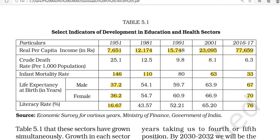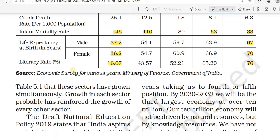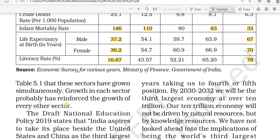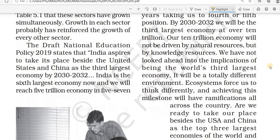By 2016-17, the literacy rate has risen to 76%, meaning 76% of people are now educated. From this table, we can understand how much education and health factors are affecting our economic growth. When health and education improve, the number of skilled workers automatically increases, per capita income rises, and healthy skilled labor increases.